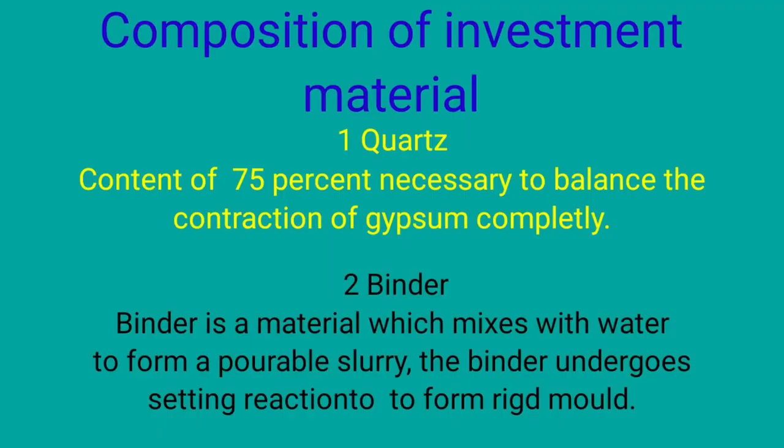Composition of investment material. Number 1: quartz — content of 75% necessary to balance the contraction of gypsum completely. Number 2: binder — a material which mixes with water to form a pourable slurry. The binder undergoes a setting reaction to form a rigid mold.